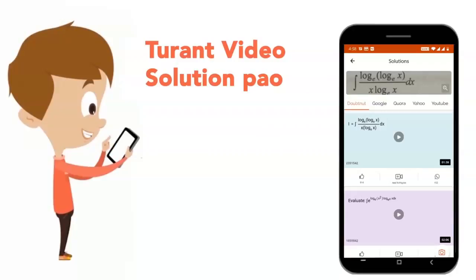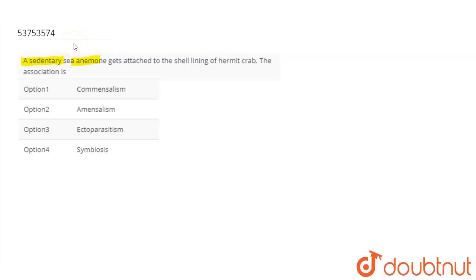So the question is: a sedentary sea anemone gets attached to the shell lining of a hermit crab. The association is?